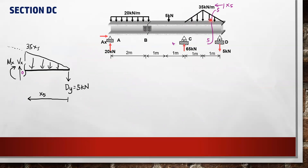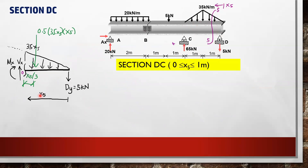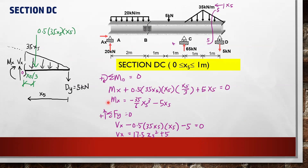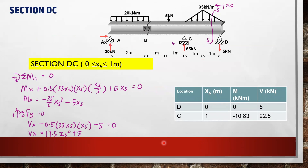Cut section 5-5 is provided with x5 measured from D. Section DC has a range from 0 to 1 m. The height of the loading is 3/5 · x5. From this, we determine the equation and location of the resultant, then write the moment and shear equations. The moment and shear values at D and 1 m from D for section DC are determined.